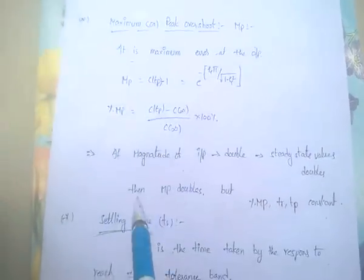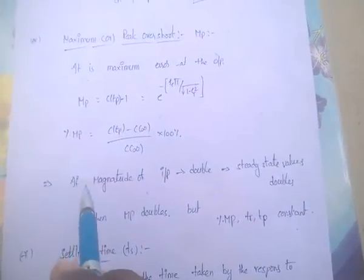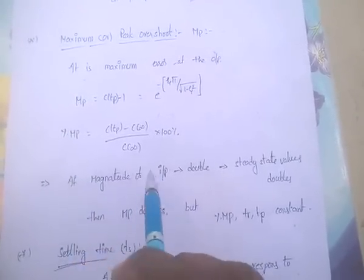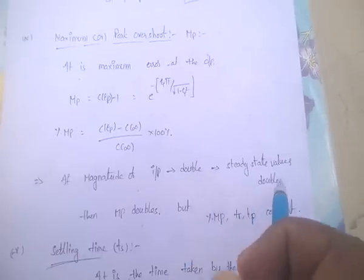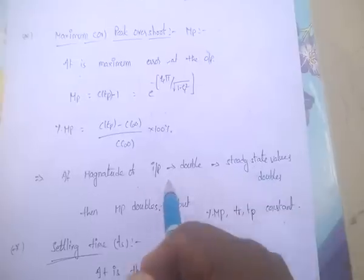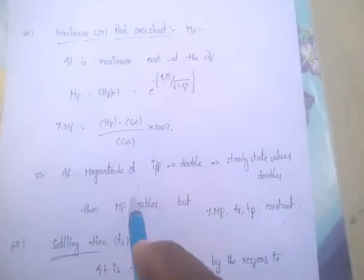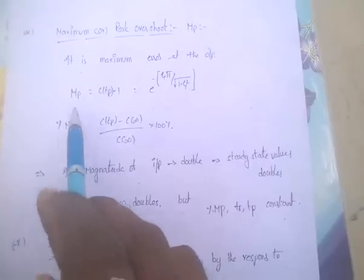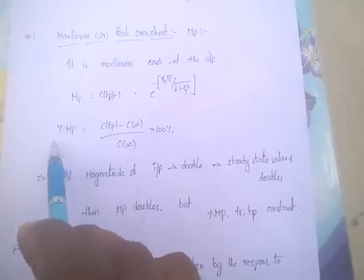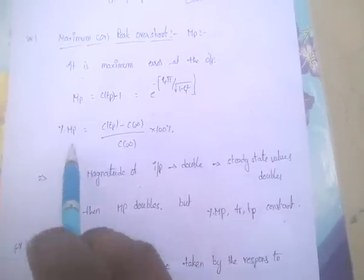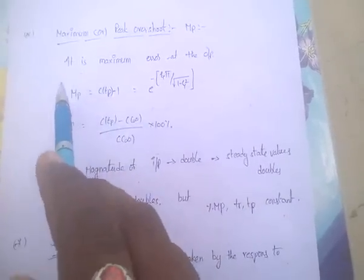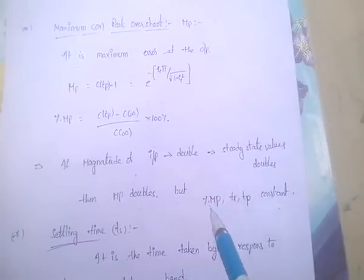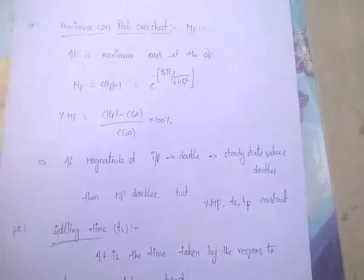One important point: if the magnitude of the input is doubled, the steady-state value doubles, and the mp value also doubles. But the percentage mp value does not change. So rise time, peak time, and percentage mp are constant when input magnitude changes.